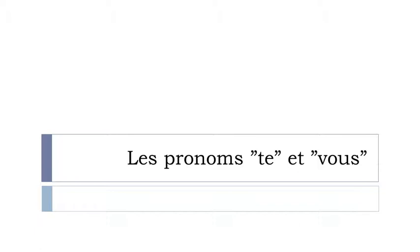So the pronouns: te — well, you — et vous, vous is you as well. The difference between the two: te is the singular form and vous is the plural form. So let's see how it goes.